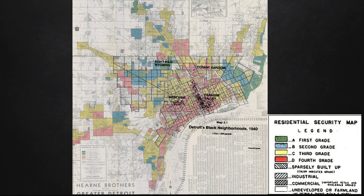The A or first grade areas were colored green and had the federal government's full blessing. These were usually new or recently built neighborhoods on the edge of town that were virtually free of African Americans or foreign-born whites. Lenders were encouraged to offer the maximum amount available to A areas. The second grade or B areas were colored blue — still good neighborhoods but beginning to fray around the edges. Mortgage lenders were advised to make loans at 10 to 15% below the maximum available amount.